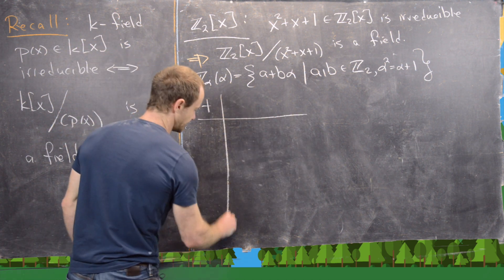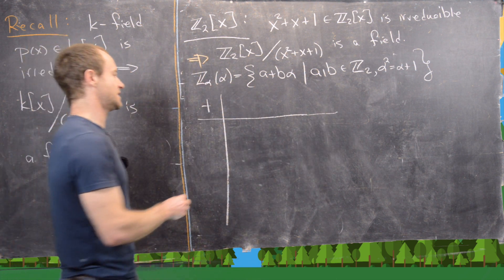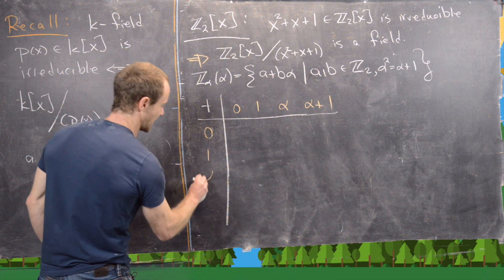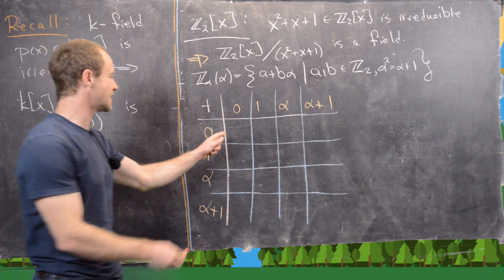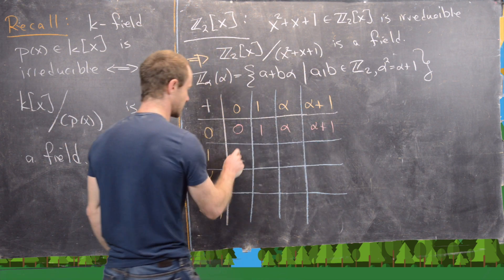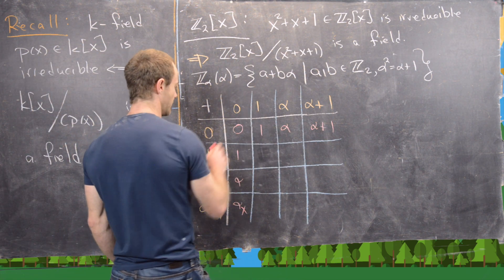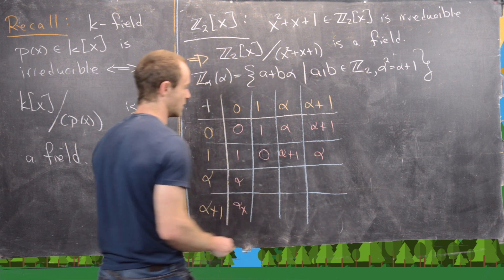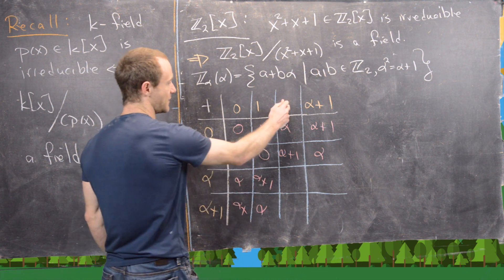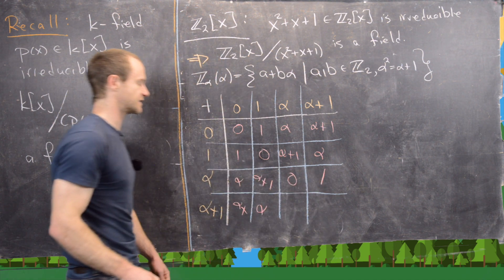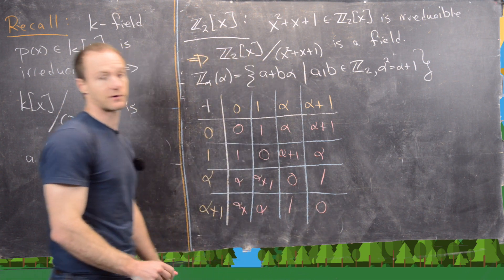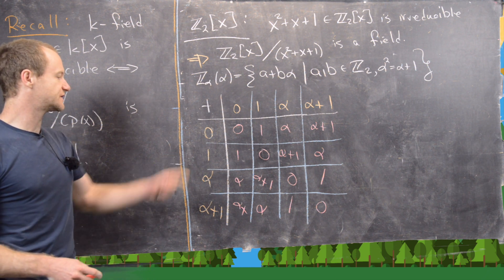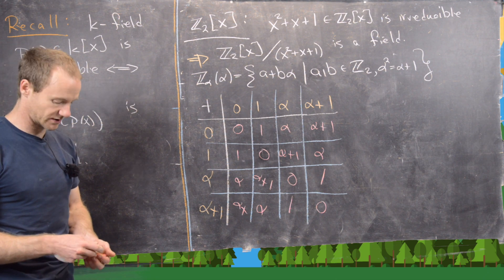The addition table has elements 0, 1, α, and α+1. Adding 0 changes nothing. Adding 1: 1+1=2=0, 1+α=α+1, 1+(α+1)=α+2=α. Adding α: α+α=2α=0, α+(α+1)=1. Adding α+1: (α+1)+(α+1)=0. Notice the diagonal is all zeros — that's because the characteristic of this field is 2: adding any element to itself gives 0.